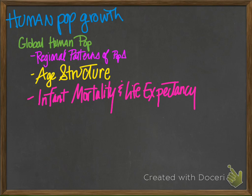In 1650, we had 500 million people, and it doubled within two centuries, and then again by 1930, and again 65 years later, and again. The current population grows by more than 200,000 people each day.